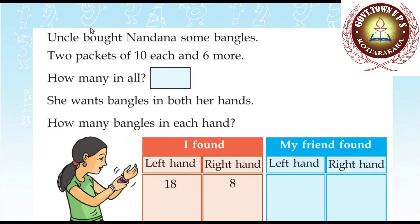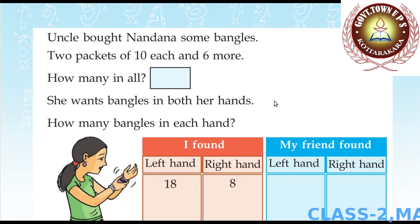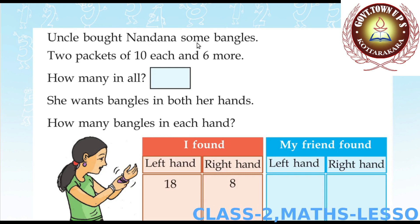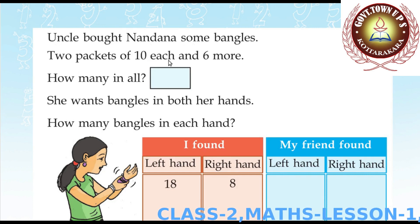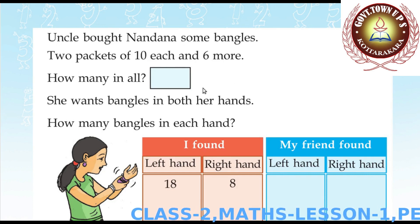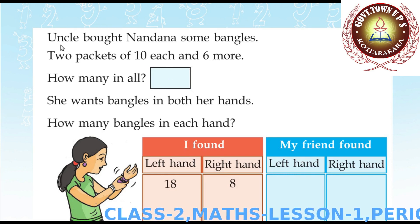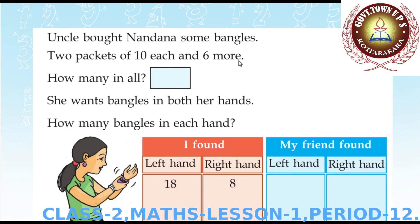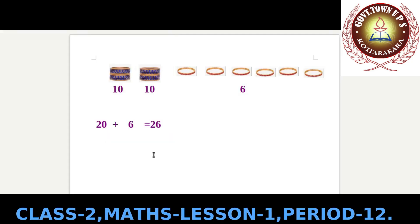Hi students, welcome to the 12th period of the first chapter of maths. Abhinant and Nandina are at the festival ground in front of the toy shop. Uncle bought Nandina some bangles — two packets of ten each and six more. How many in all?